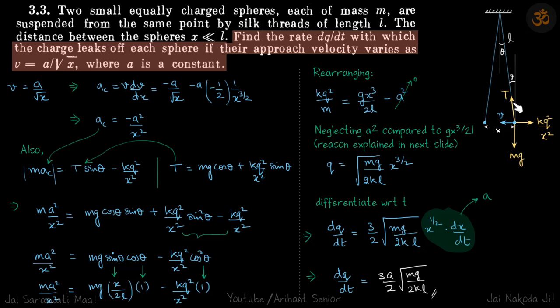mg is vertical, so we don't need to write that here. We are writing this in x direction. Now, because there is no acceleration along the direction of the string, we can say t is equal to mg cos theta plus kq square by x square sin theta. So forces in the direction of the string are balanced.